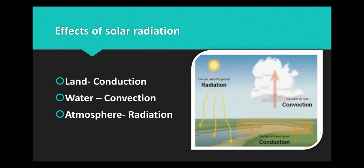Effect of solar radiation. Land: Conduction is the transfer of heat energy through the land. Water: Convection is the transfer of heat energy through the water. Radiation is the transfer of heat energy in the air.